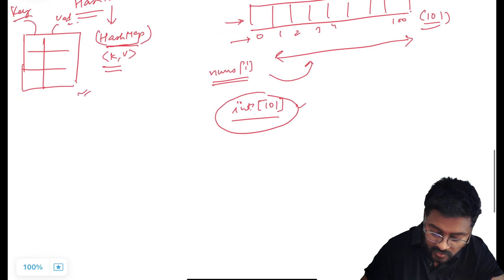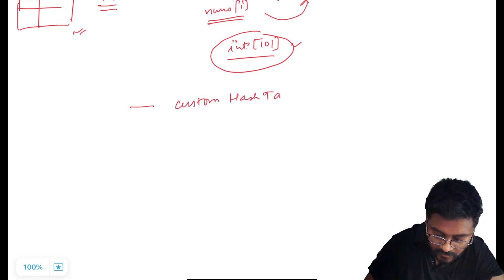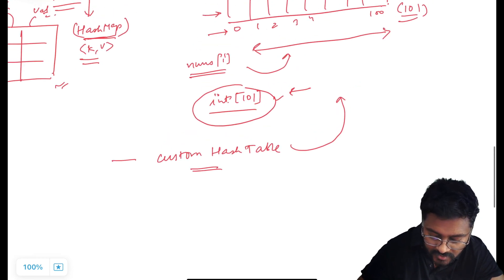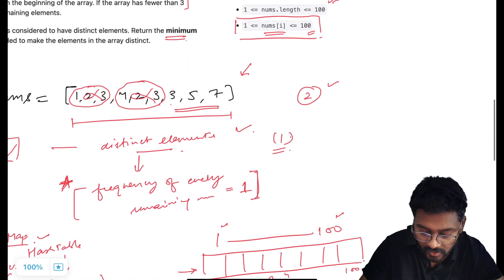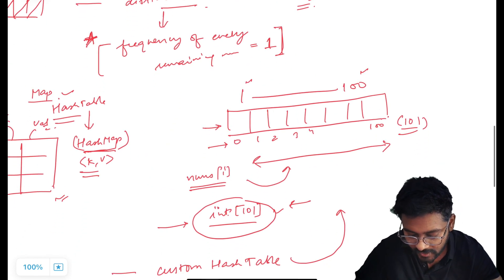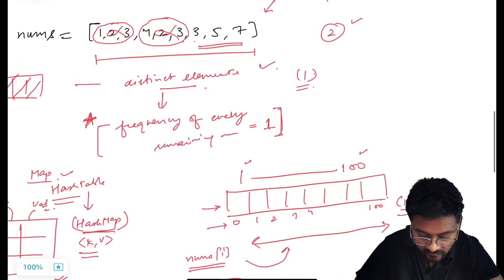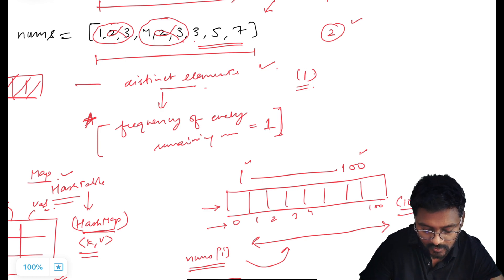Keep it very simple — we call this a custom hash table. We create it using an integer array of size 101, because every element is guaranteed not to exceed 100. In this array we can store the frequency of each element. To do that, we do one iteration over the nums array and store the frequencies by incrementing the value at the index corresponding to each element.